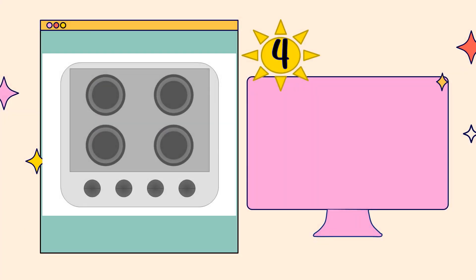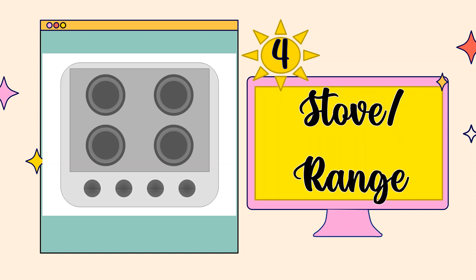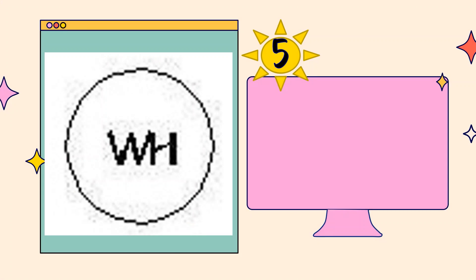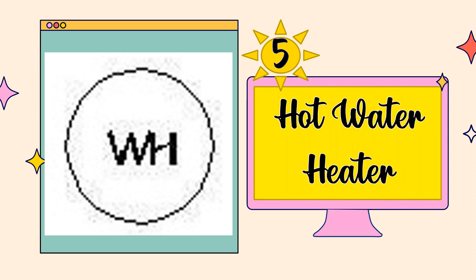Number 4: What kitchen floor plan symbol is this? Number 5: What kitchen floor plan symbol is this? The correct answer is hot water heater.